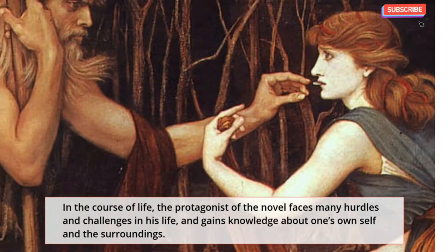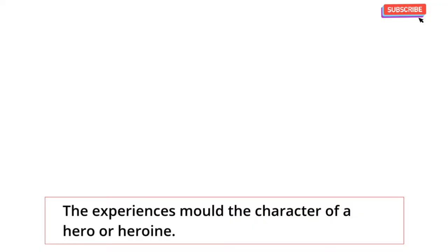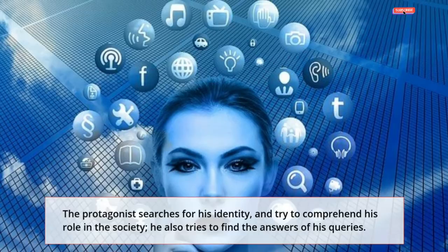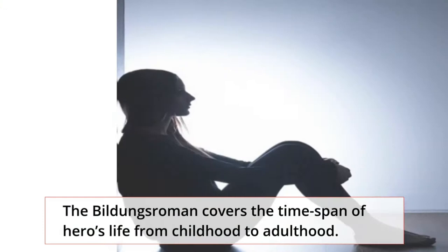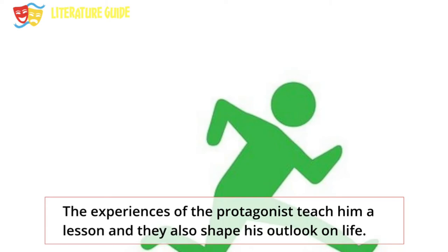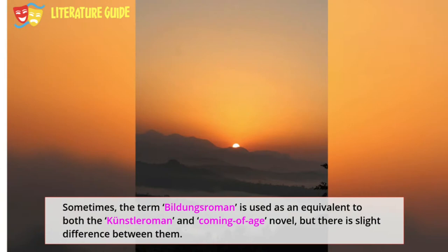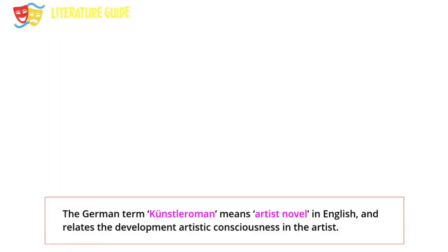In the course of life, the protagonist of the novel faces many hurdles and challenges and gains knowledge about one's own self and the surroundings. The experiences mould the character of a hero or heroine. The protagonist searches for his identity and tries to comprehend his role in society. He also tries to find answers to his queries and bravely faces adverse conditions. The Bildungsroman covers the time span of the hero's life from childhood to adulthood. The experiences of the protagonist teach him a lesson and shape his outlook on life. Most education novels have been written in subjective tone. Sometimes the term Bildungsroman is used as an equivalent to both the Künstlerroman and coming-of-age novel, but there is a slight difference between them.